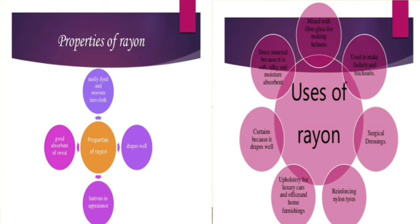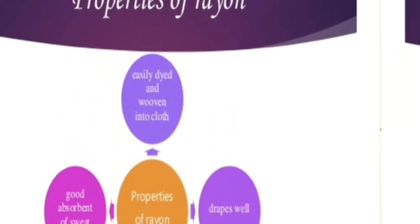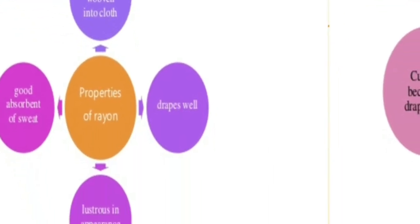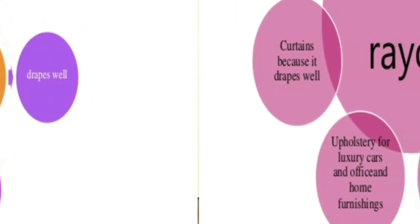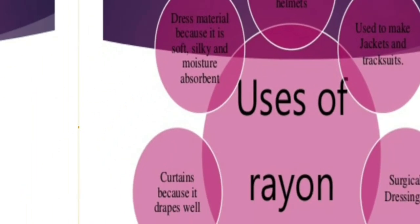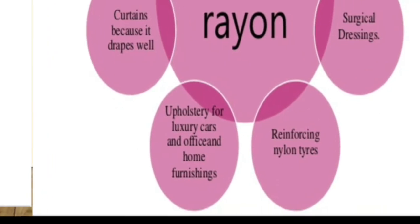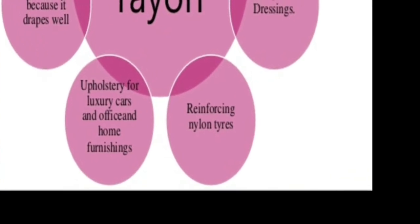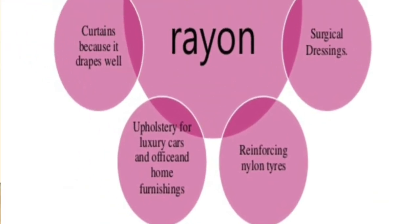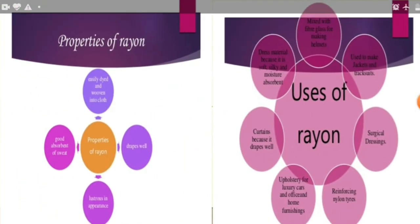Coming back: rayon is the first fiber. Its properties — it is a very good absorbent, dries easily, drapes well, and is lustrous and shining — this is why it is called artificial silk. Uses: mixed with fiberglass to make helmet material, curtains because it drapes well, upholstery for luxury cars and home furnishing, reinforcing nylon tires, and surgical dressings.